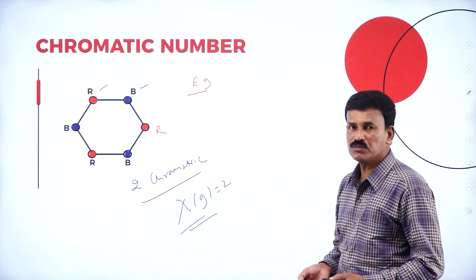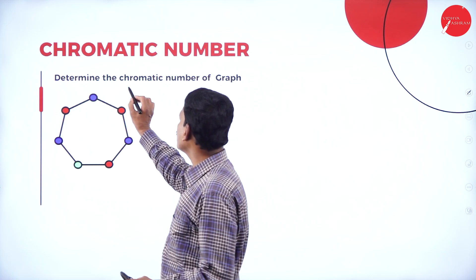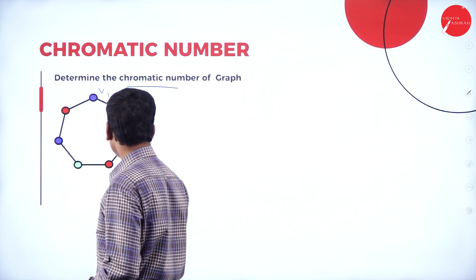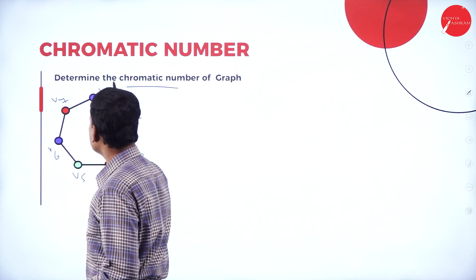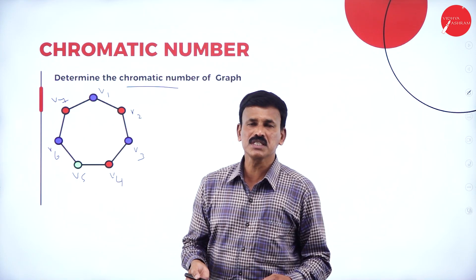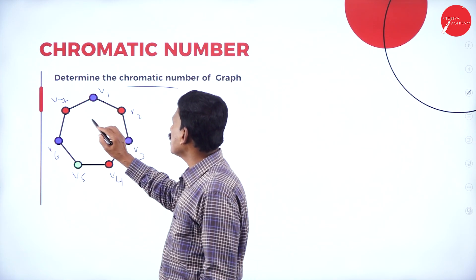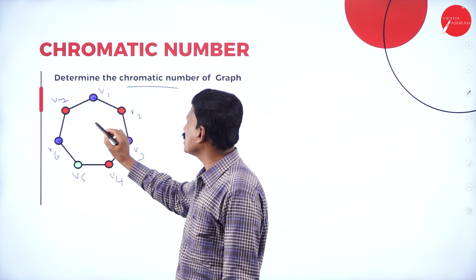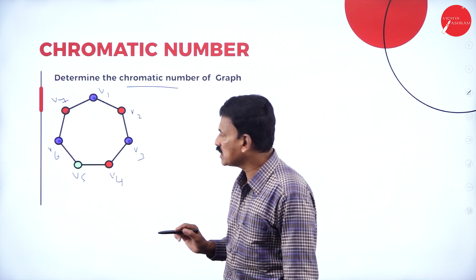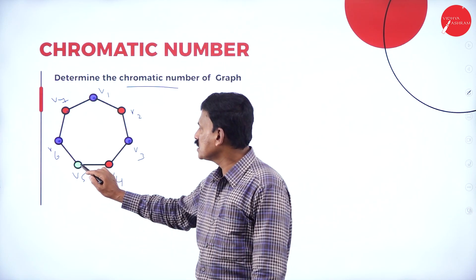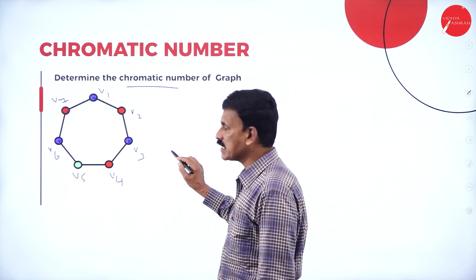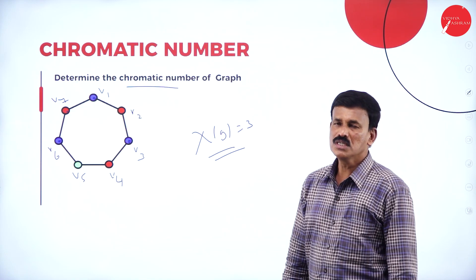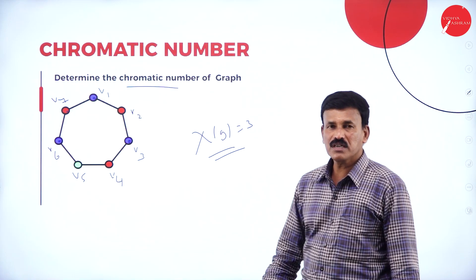Let us take one more example to find the chromatic number. How many vertices are there? V1, V2, V3, V4, V5, V6, V7 — seven vertices, which is odd. Therefore it is a three-chromatic graph. V1, V3, and V6 are not connected so we represent them with the same color. V2, V7, and V4 are not connected so we assign them another color. The third color is for the remaining vertex. The chromatic number for this graph is equal to 3 — the minimum number of colors used is 3.